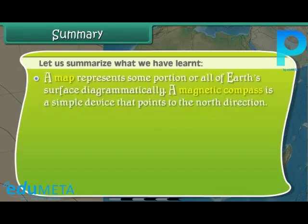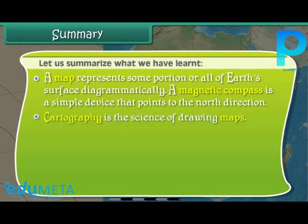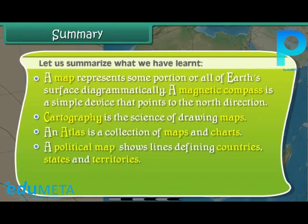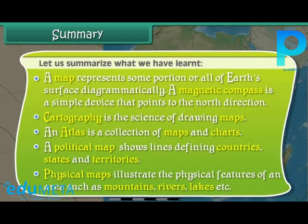A map represents some portion or all of the Earth's surface diagrammatically. A magnetic compass is a simple device that points the north direction. Cartography is the science of drawing maps. An atlas is a collection of maps and charts. A political map shows lines defining countries, states and territories. Physical maps illustrate the physical features of an area such as mountains, rivers, lakes, etc.